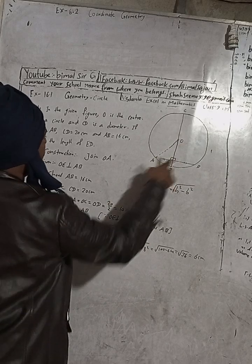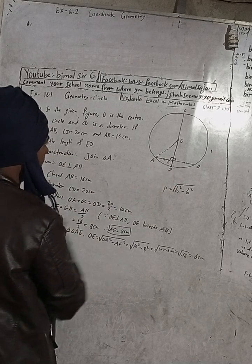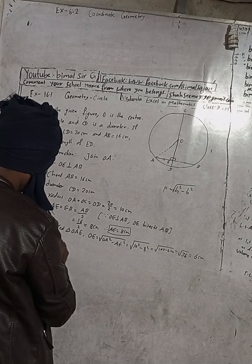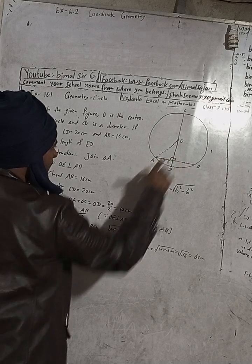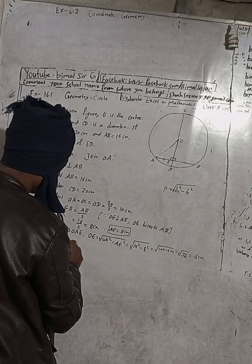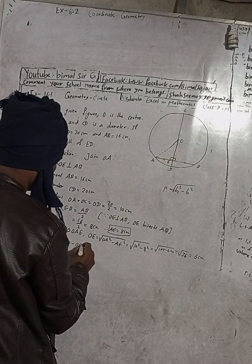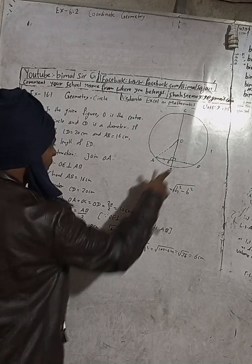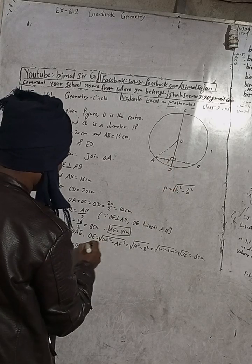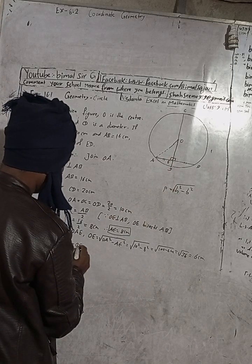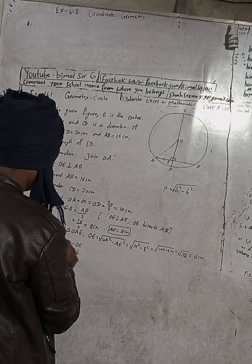Now that we know OE, the question asks us to find the length of ED. ED is equal to OD minus OE. OD is the radius, which is 10 cm, and OE we just found to be 6 cm. So ED equals 10 minus 6, which is 4 cm. We can also write: OE plus ED equals OD, therefore ED equals OD minus OE equals 4 cm.